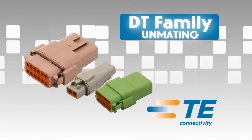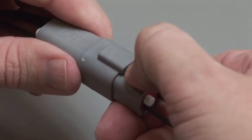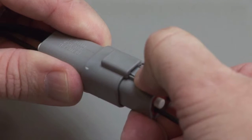DT Unmating. To unmate a DT series connector, depress the locking latch on the outside of the plug while pulling the plug and receptacle apart.